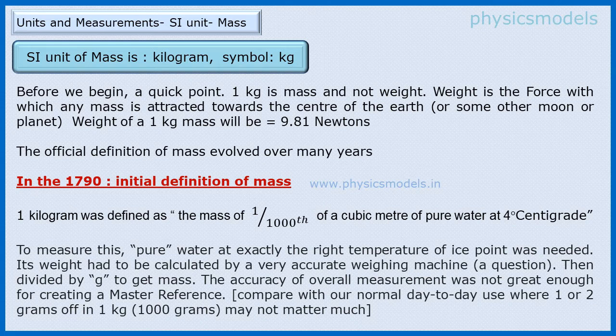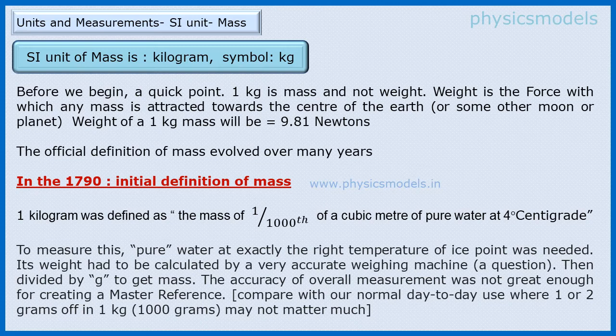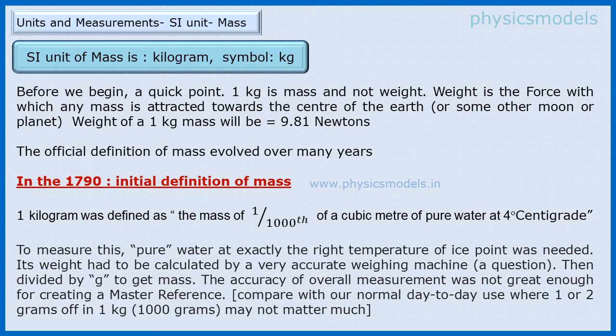Just a reminder that one kg is the mass defined as the amount of matter in a body. Weight is different - weight is the force with which this matter is attracted towards the center of the earth. For a mass of one kg, the weight would be one into g, acceleration due to gravity, which is 9.81 meters per second squared, so the weight would be 9.81 Newtons, which is a pure force.